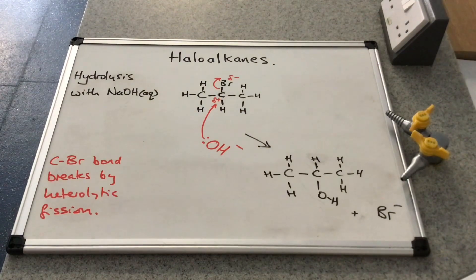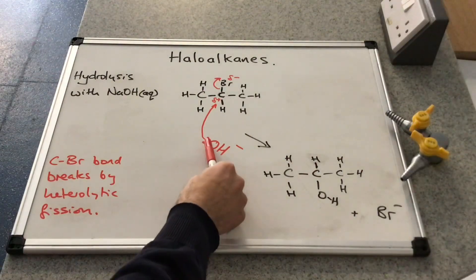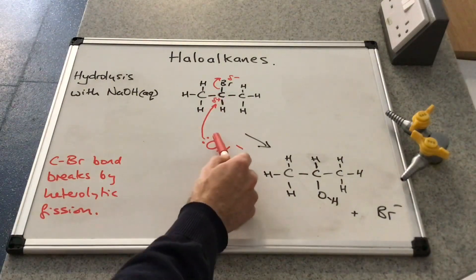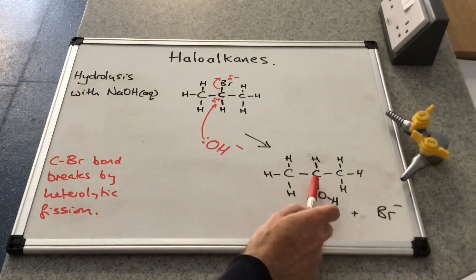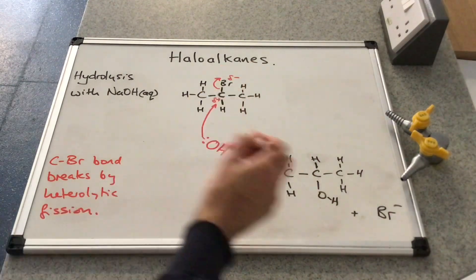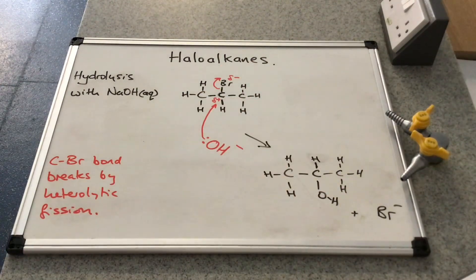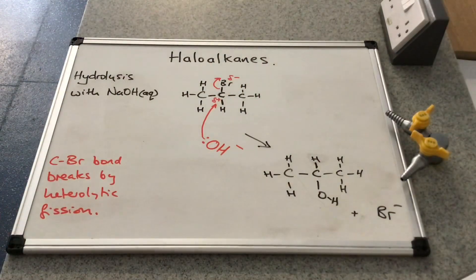So a really straightforward mechanism, this one. You can see we've broken that C-Br bond, and we've formed a new covalent bond with the oxygen to the carbon. So there it is there. There's that new bond. And that's obviously the hydrogen that was already on the carbon. The bromine, when it breaks off by this heterolytic fission, is now a bromide ion.